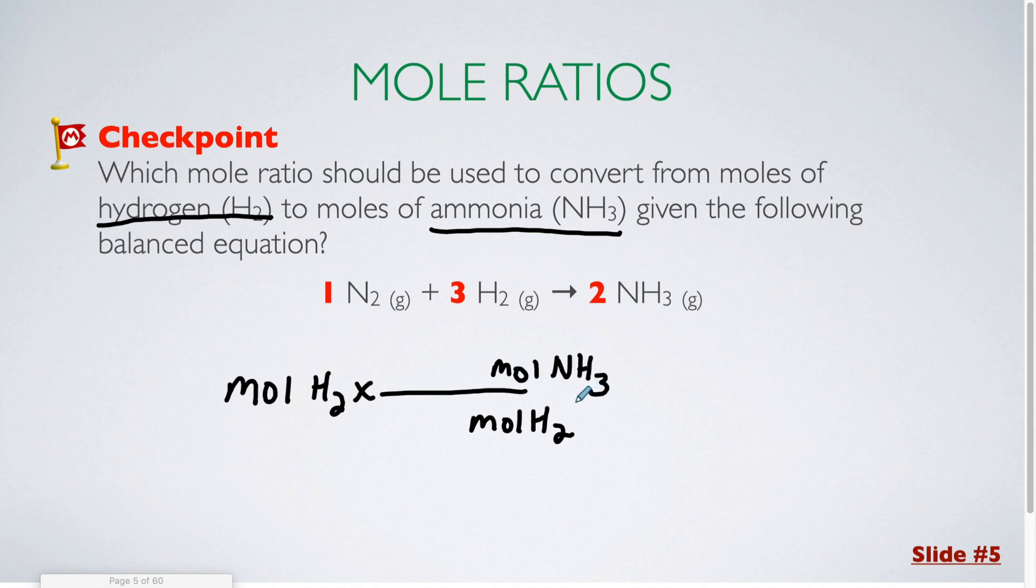So that's going to go on top. I'm getting the coefficients from the balanced equation, so this time I'm using these two numbers. The ammonia gets the two and the hydrogen gets the three. For this particular question, I just need the mole ratio. I'm not actually doing a calculation, so that would be the answer. This is my mole ratio right here.